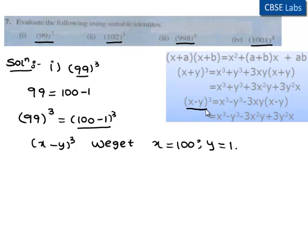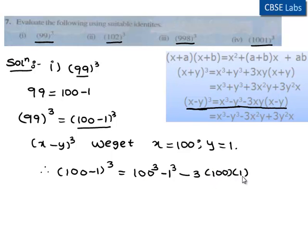From the identity, (x minus y) cubed is equal to x cubed minus y cubed minus 3xy times (x minus y). Therefore, (100 minus 1) cubed is equal to 100 cubed minus 1 cubed minus 3 times 100 times 1 times (100 minus 1).